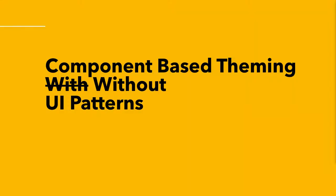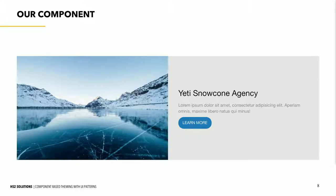Now let's look at component-based theming without UI Patterns. Before this module existed, there was an approach to basically make Drupal aware of components that live in your component library — something I've done on projects. We're going to look at this component from Foundation's Building Block Kits, specifically the Marketing Building Block Kit. It provides us with some nice components to use as examples. It has an image, a header, a subheader, and a button.